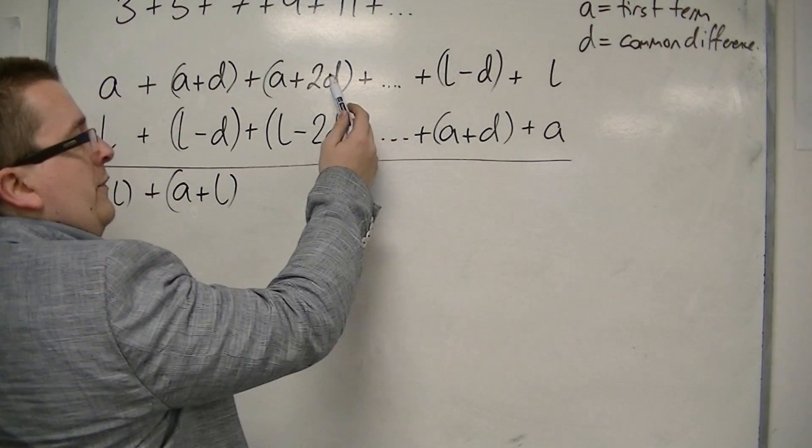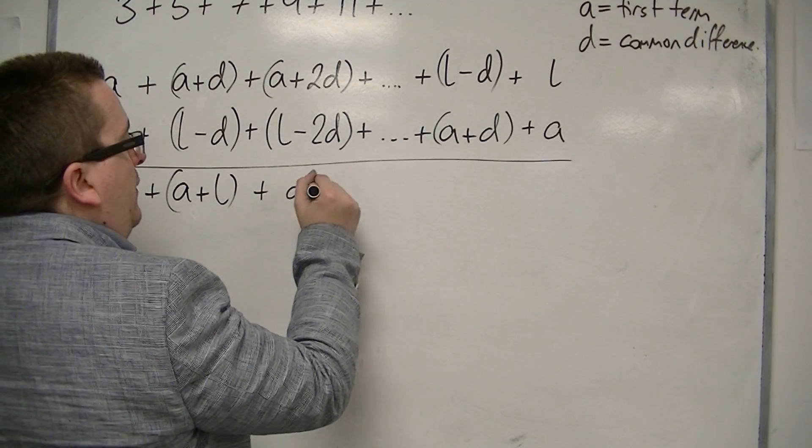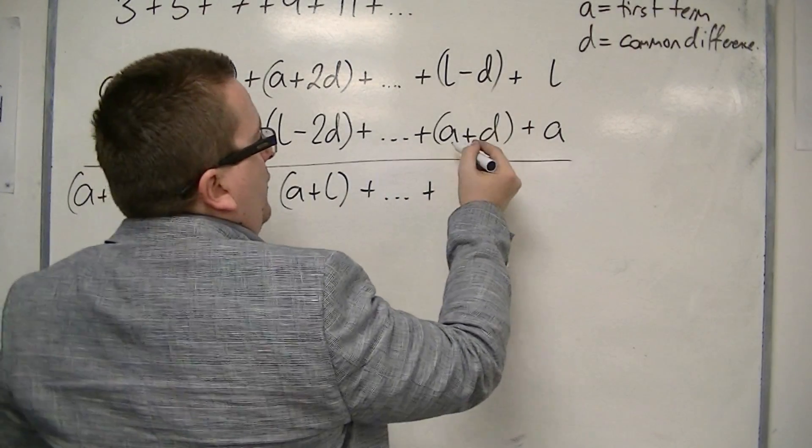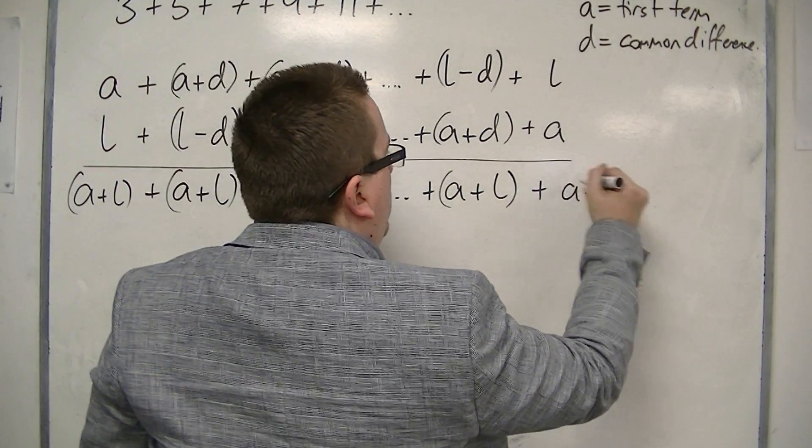And then here I'm going to have the 2D take away 2D, so they cancel, and just leaving me with A plus L. And then here I've got the D's cancelling, and I'm just going to have A plus L. And finally, just A plus L.